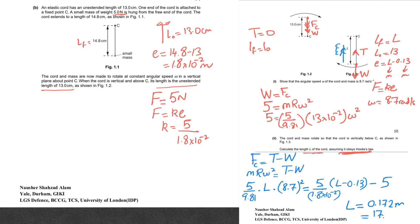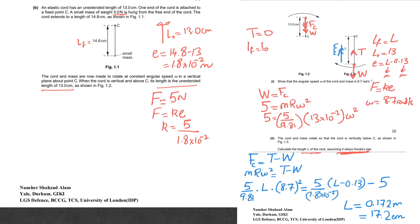Now the common question that I always get in this question is: when you were substituting the value of T and you used this, why did you not take the extension to be 14.8 minus 13? Try to understand - when it was 14.8 minus 13, your object was simply hanging, it wasn't spinning. Now when it starts to spin, the extension changes. That's why I cannot use 14.8 minus 13. I hope that makes sense.